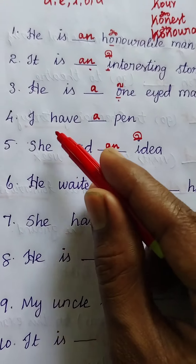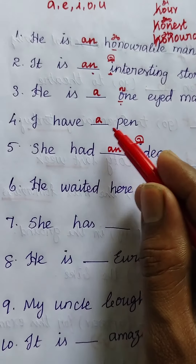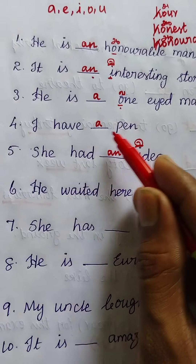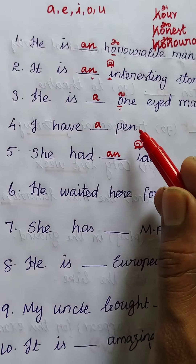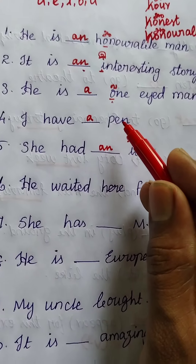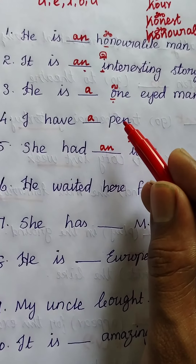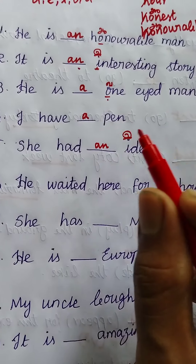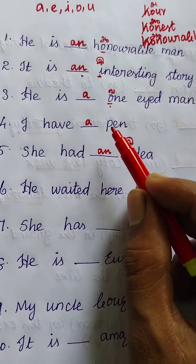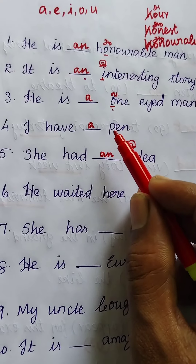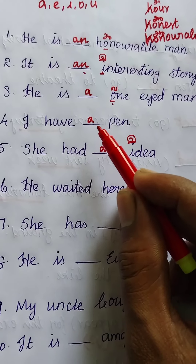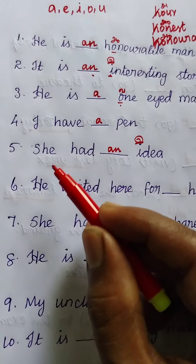Next: 'I have ___ pen.' The answer is 'I have a pen.' Here there is no special rule — it's a common sentence. When talking about only one thing and the word starts with a consonant letter, we automatically use article 'a'.